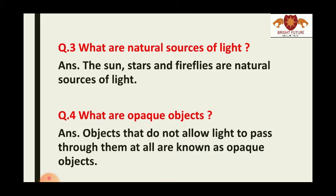Question number four: What are opaque objects? Answer is: objects that do not allow light to pass through them at all are known as opaque objects. For example, wood — light does not pass through wood at all, so wood is an opaque object.